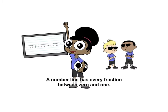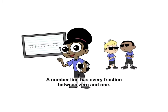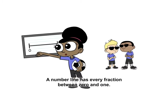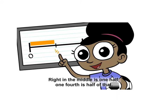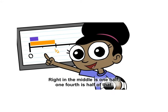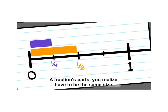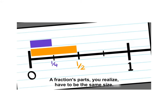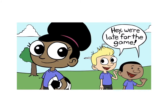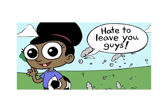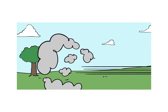A number line is every fraction between zero and one. Right in the middle is one half, and a fourth is half of that. A fraction's parts you realize have to be the same size. Hey, we're late for the game — hate to leave you guys.